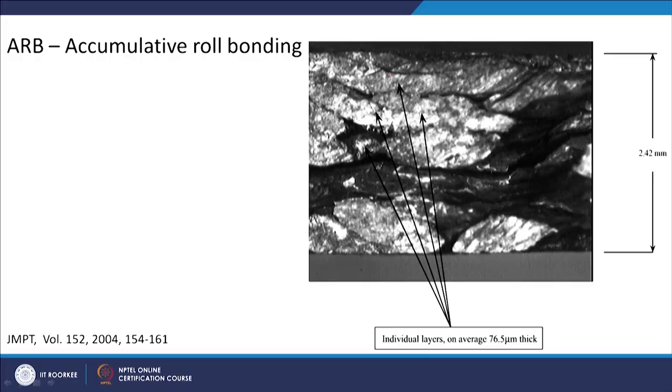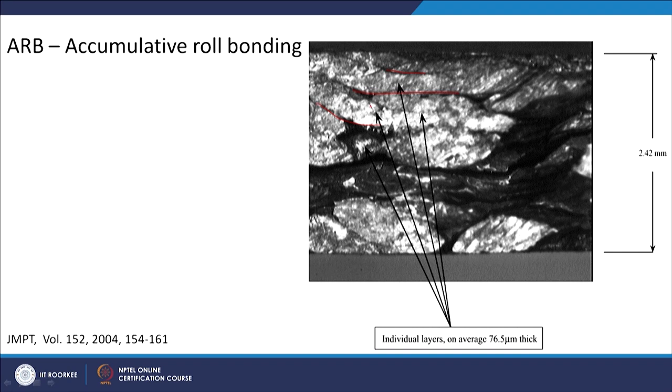In the micrograph you can see how the accumulated roll bonding layers appear. All these black lines are the interfaces where stacking was done — when you do stacking an interface is always formed. The initial layer is visible and you can also see the effect of this interface. Individual layers are stated to be around 76.5 microns thick. Because of these interfaces formed, you would not get very good ductility — the interface will cause the material to separate out before reaching the desired deformation.